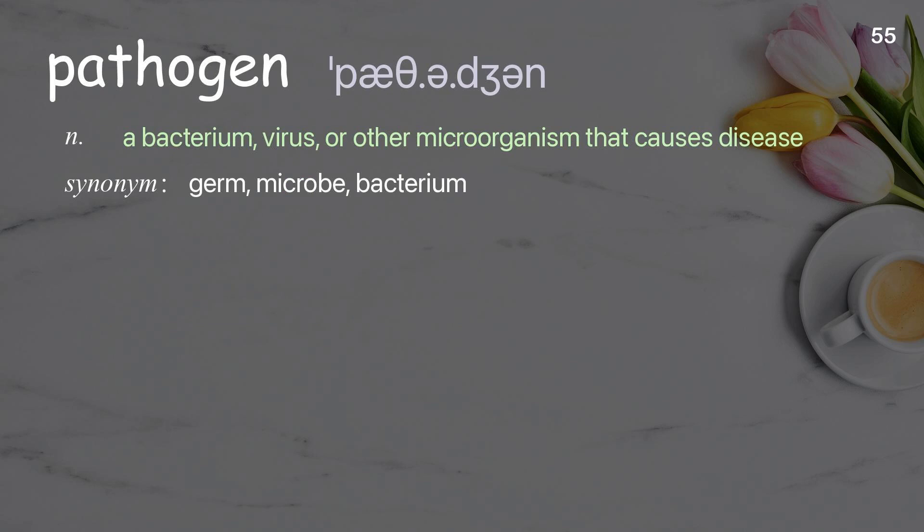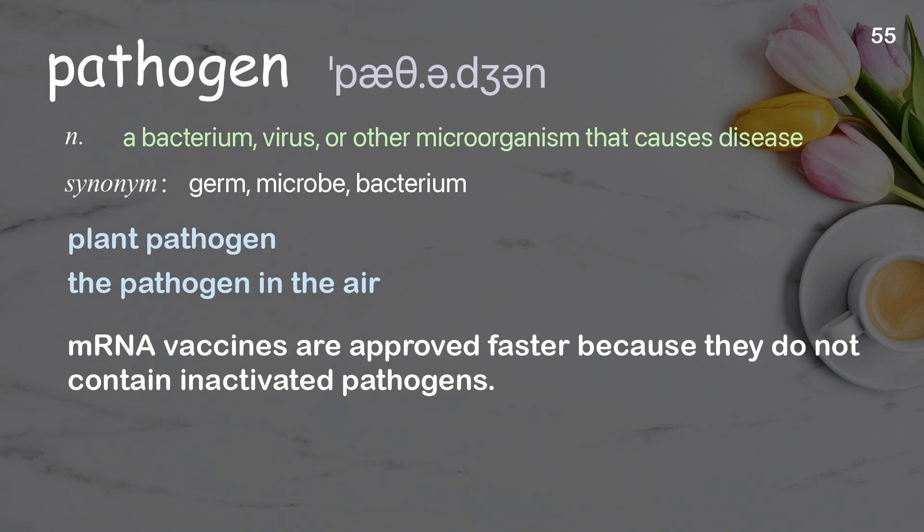Pathogen: a bacterium, virus, or other microorganism that causes disease. Examples: plant pathogen, the pathogen in the air. mRNA vaccines are approved faster because they do not contain inactivated pathogens.